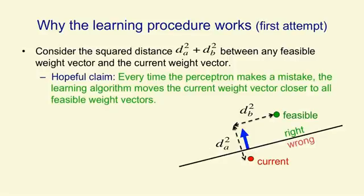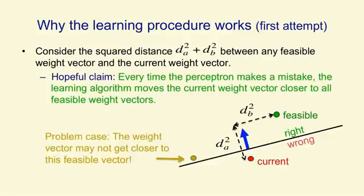Now, this is almost right, but there's an unfortunate problem. If you look at the feasible weight vector in gold, it's just on the right side of the plane that defines one of the training cases, and the current weight vector is just on the wrong side, and the input vector is quite big. So when we add the input vector to the current weight vector, we actually get further away from that gold feasible weight vector. So our hopeful claim doesn't work, but we can fix it up so that it does.